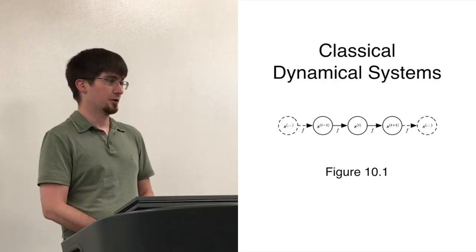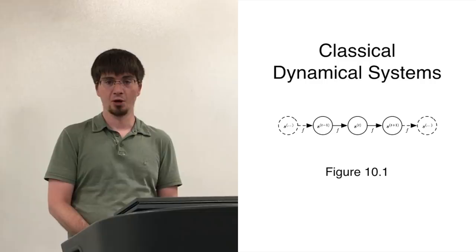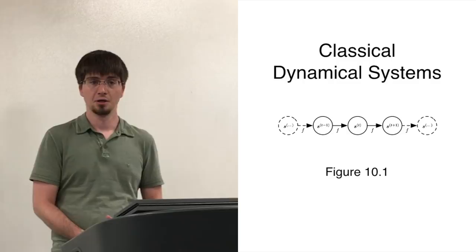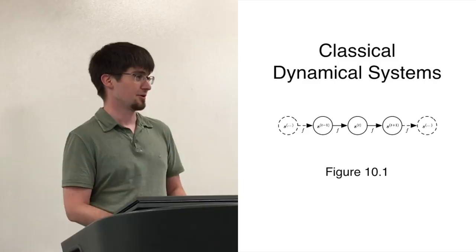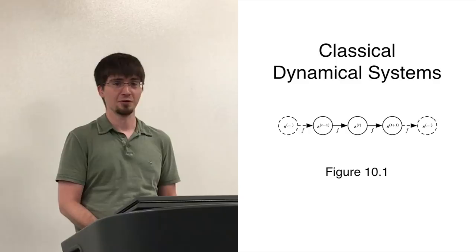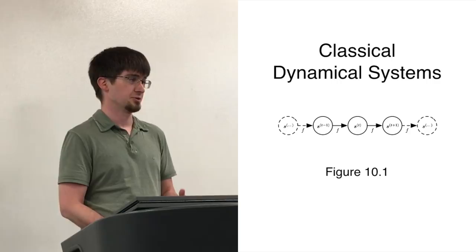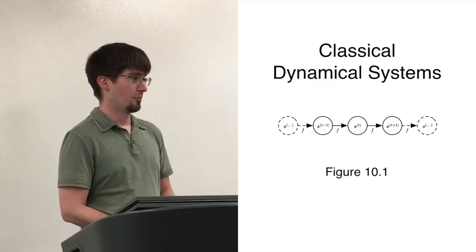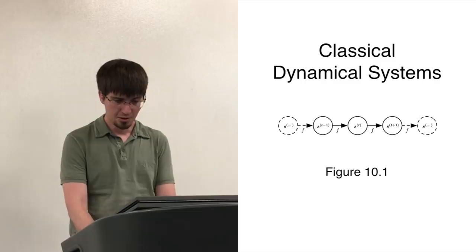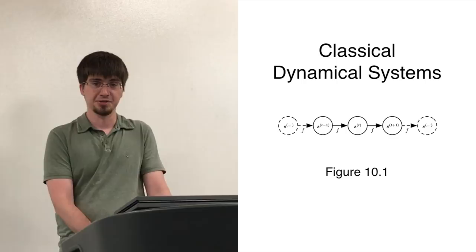There is one big assumption underlying this model: the way the world works doesn't change. This is the same kind of assumption throughout basically all of science — you can think of science as the assumption that the rules of the universe stay the same over time. If we do an experiment on Thursday, we learn something about the rules of the universe, and we can apply those rules on Monday next week. You could imagine other worlds where all the rules change arbitrarily from one day to the next, but then you wouldn't be able to do any science or machine learning. Recurrent nets are just a way of formalizing this idea of a dynamical system updated in discrete steps over time.